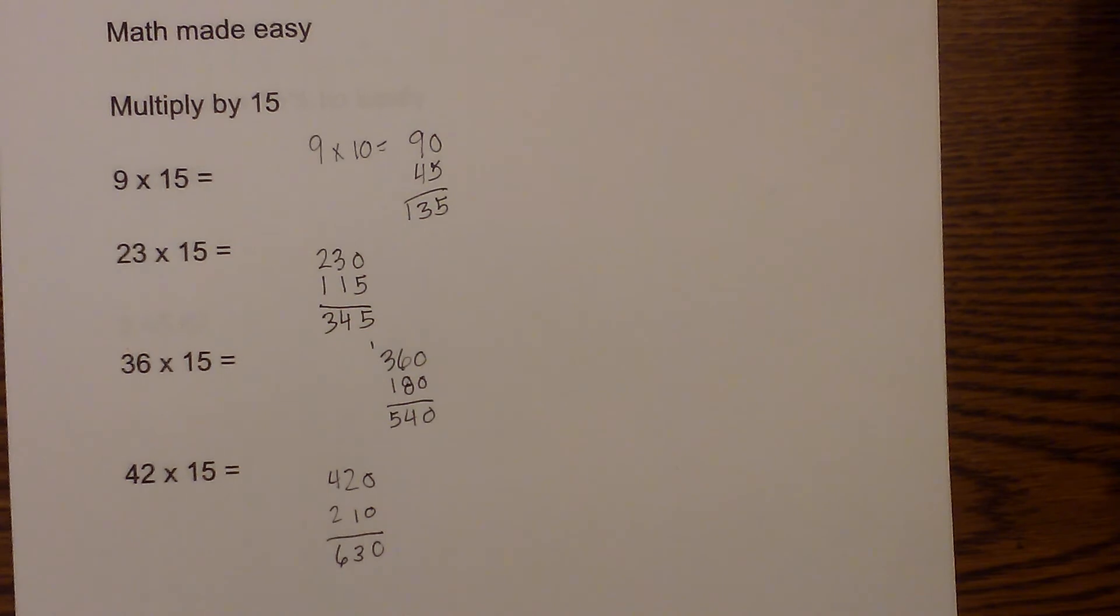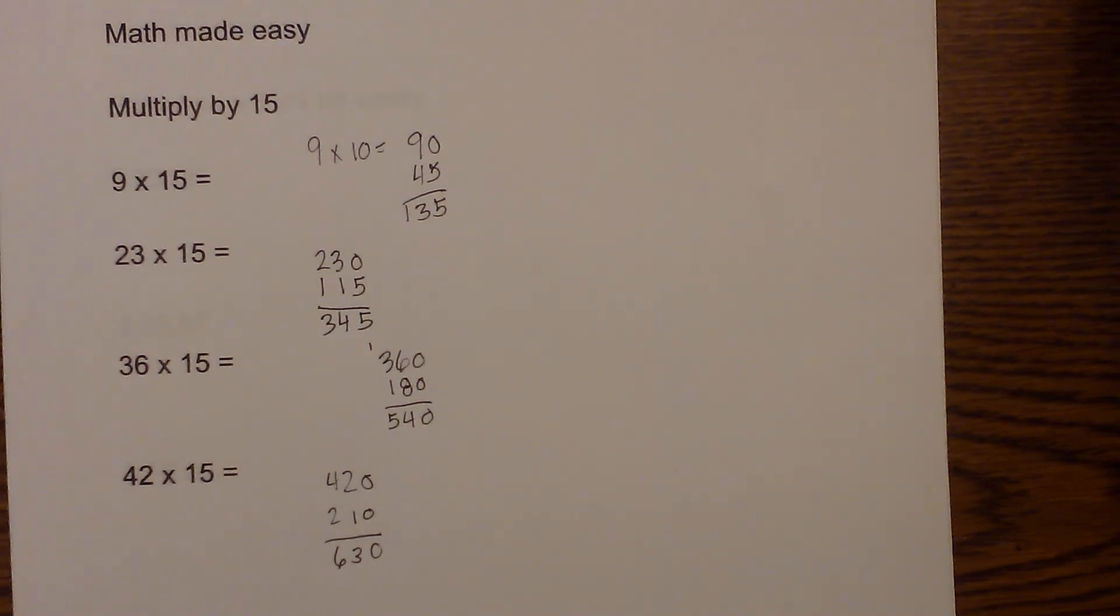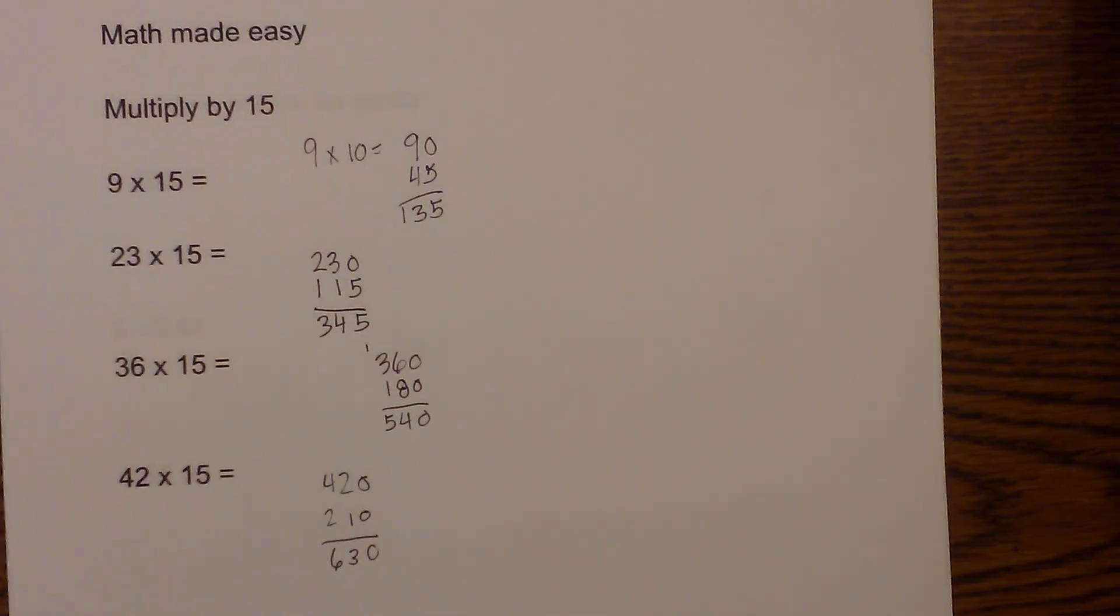So there we go. Multiplying by 15: multiply the number by 10, divide that number in half, add them together, and it makes life nice and easy. Thanks for watching. Moomoo math uploads a new math and science video every day. Please subscribe and share.